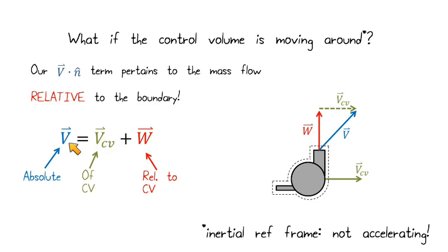I have this v. That's the movement that's absolute in the absolute reference frame. So I'm standing still on the ground watching a jet fly overhead. What does the velocity of the fluid look like to me standing on the ground? That's equal to the velocity of the control volume itself, how fast is the jet moving, plus the velocity relative to that control volume, which we call w.